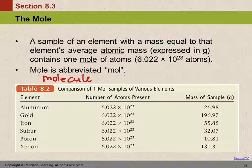The idea of the mole fits best with the idea of a dozen. We do have other counting units in real life. Do you know what a ream is? A ream of paper is 500 sheets — ream is a unit that means 500. Do you know what a gross is? It's not something disgusting — a gross is a dozen dozen, which is 144 of something. It's a counting unit.